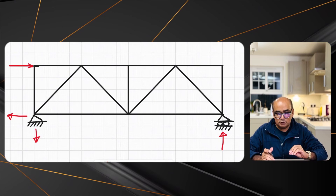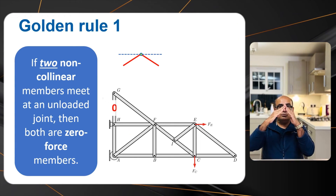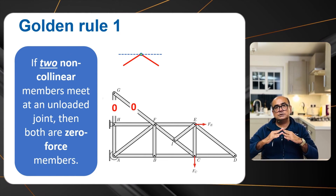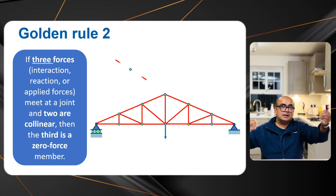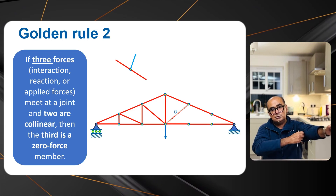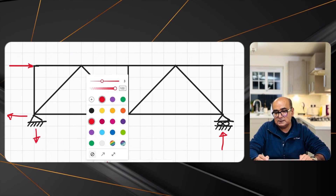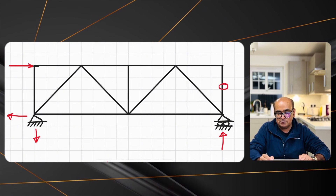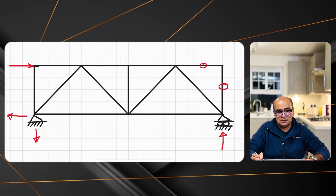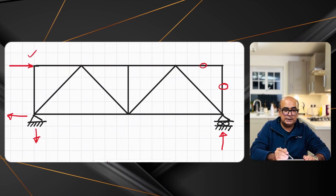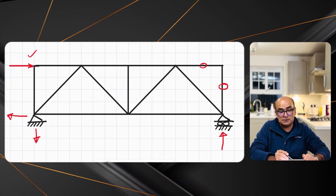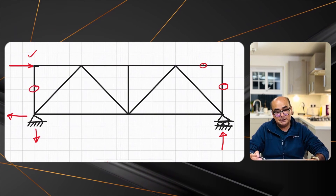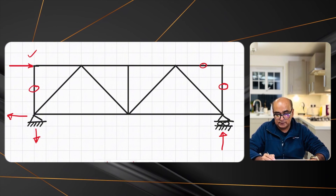First, let's determine the zero force members using the golden rules: two members connected at less than 180 degrees with no external load — forces are zero; or two co-linear members with a third attached — that third member is zero force. I can see immediately two members connected here — so the force in that member is zero. Another member connected similarly also has zero force. At this joint, only a horizontal force is applied with no vertical component, so the vertical member here is also zero force. Let's remove these three members.